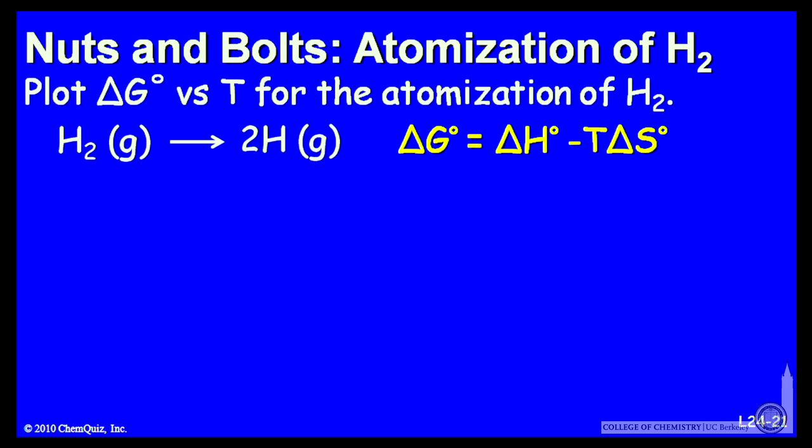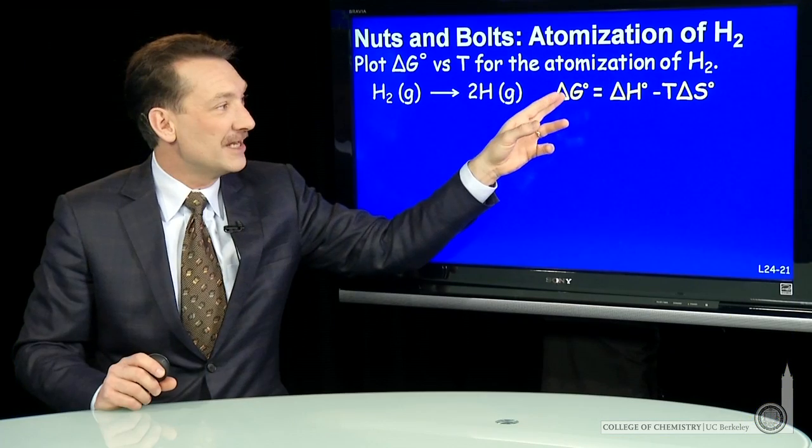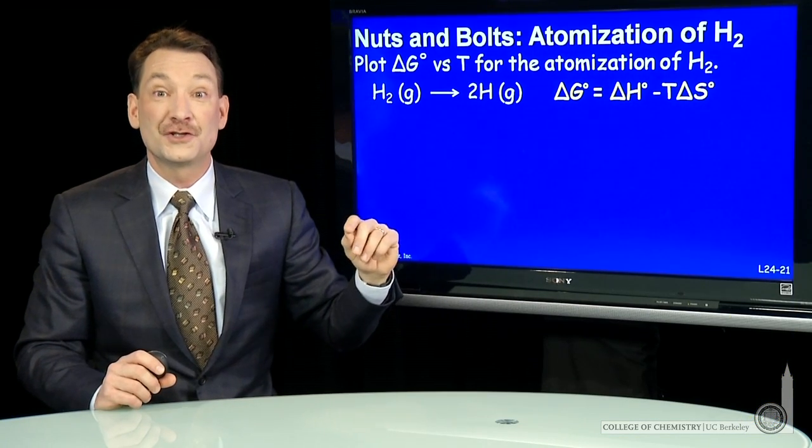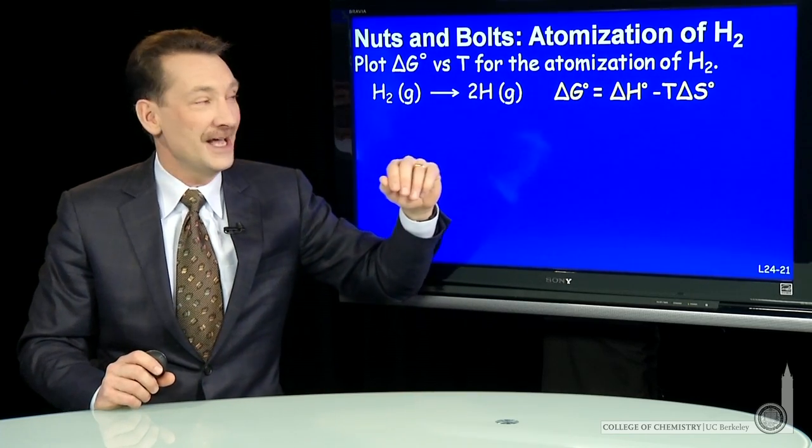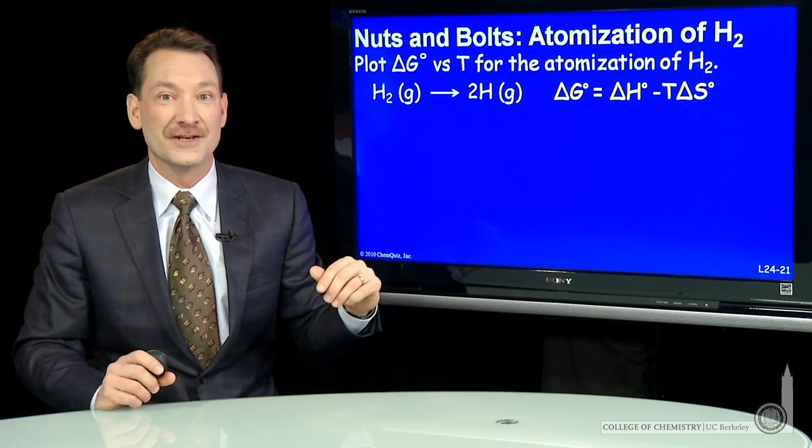I need to know the enthalpy difference, standard state enthalpy difference, and the standard state entropy difference, because delta G versus T is a straight line with a slope delta S and an intercept delta H.